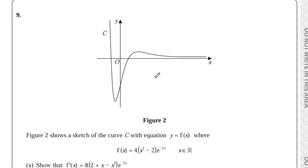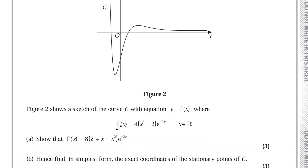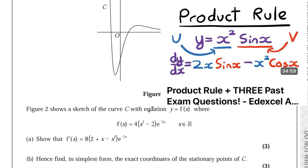For this question we're given a figure and we're told this is a sketch of the curve C with equation y equals f(x), where f(x) equals 4x squared minus 2 e to the power of minus 2x. For part A, for three marks, we need to show that f'(x) is equal to the given expression. So we need to differentiate f(x), and to do that we're going to use the product rule.